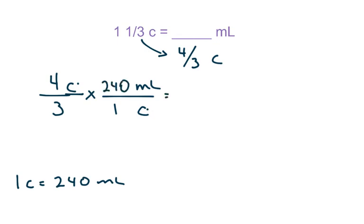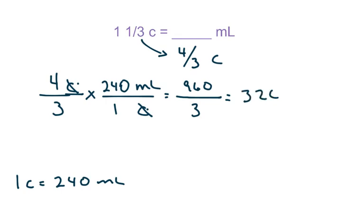You can cross simplify, but since we can use our calculator now, just trust it. Multiply straight across: 4 times 240 is 960. Cancel units first, then straight across the bottom: 3 times 1 is 3. Last step is divide: 960 divided by 3, and you have 320. The unit left over is milliliters, so the answer is 320 milliliters.